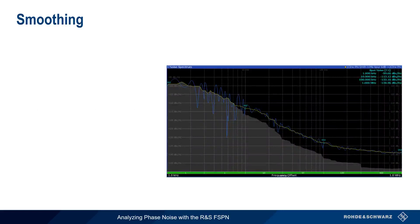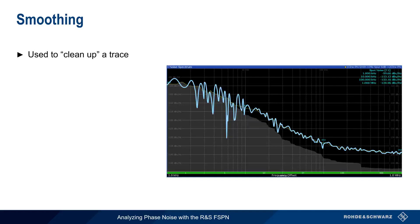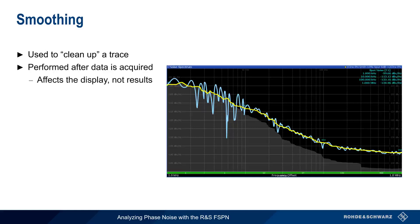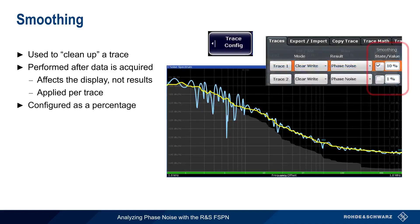Now that we've covered the important noise configuration parameters, let's spend a minute talking about ways of displaying phase noise results. Smoothing is used to clean up traces. Here is the raw or unsmoothed trace, and here is the smooth trace. Smoothing is performed after data is acquired — that is, it affects the display, not the results. Smoothing is also applied per trace, and it's possible to display both the smoothed and unsmoothed traces simultaneously, as shown here. Smoothing is configured using Trace Config and is specified as a percentage. Larger values increase the smoothness of a trace.